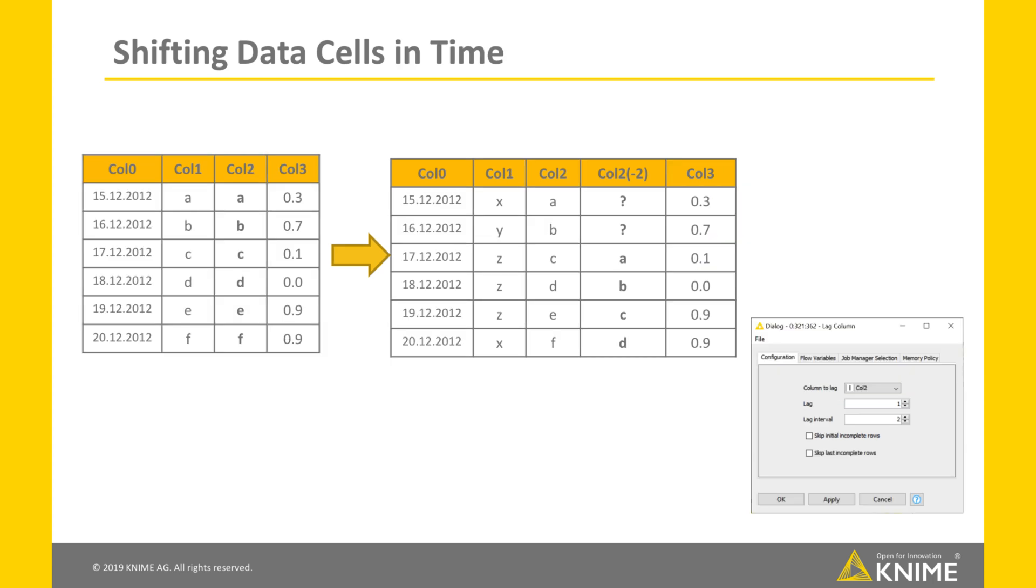Now, imagine that the data rows have been sorted by time. Then moving the data cells down is equivalent to moving the data cells back in the past or forward in the future, depending on the time sorting. If the date-time cells are sorted in ascending order like here, then if we set Lag Interval to 2, data cells in Column Col2 move two steps from the past into the future.